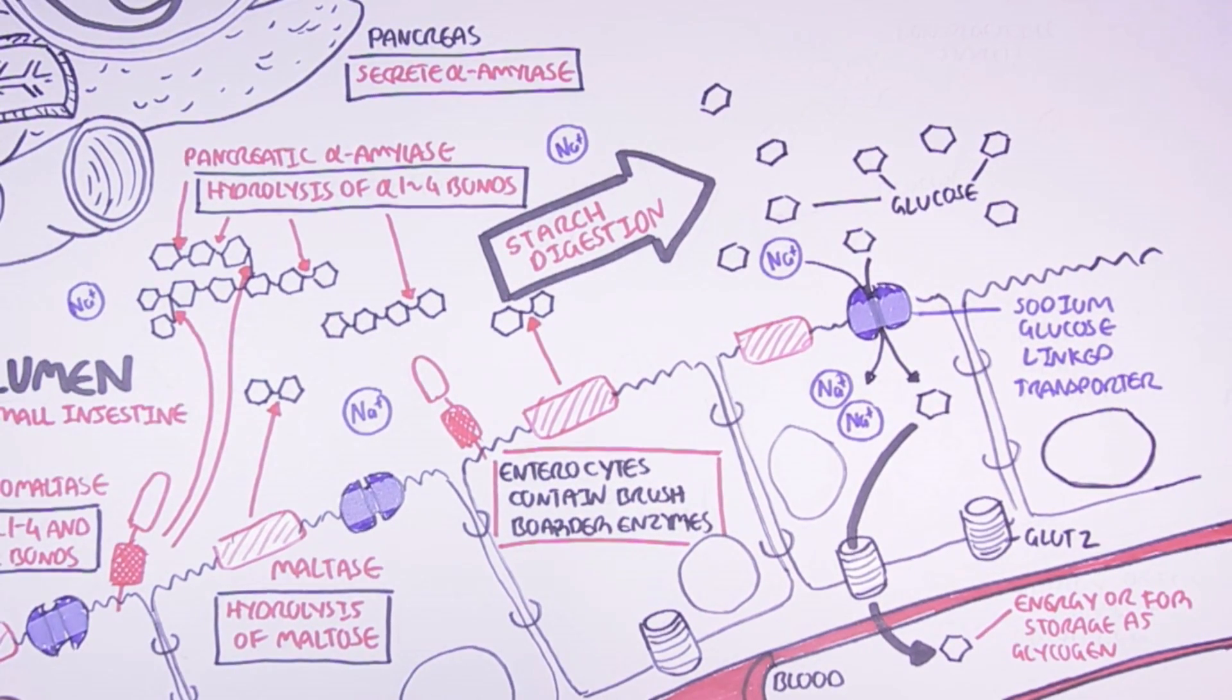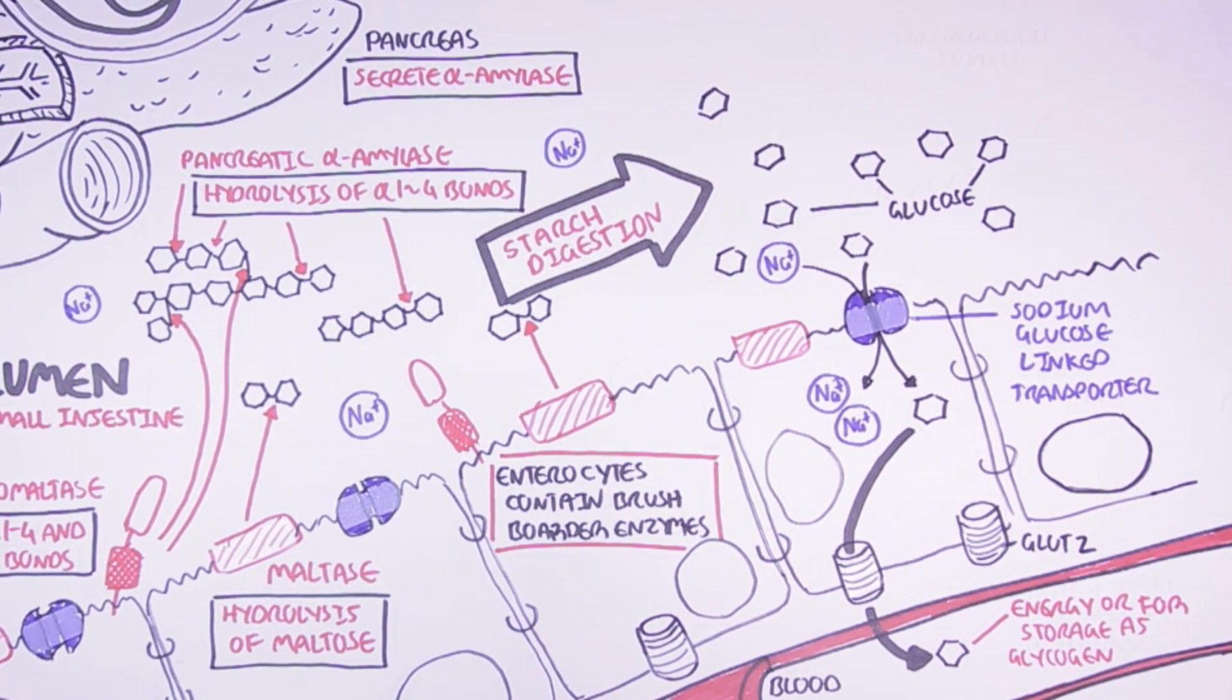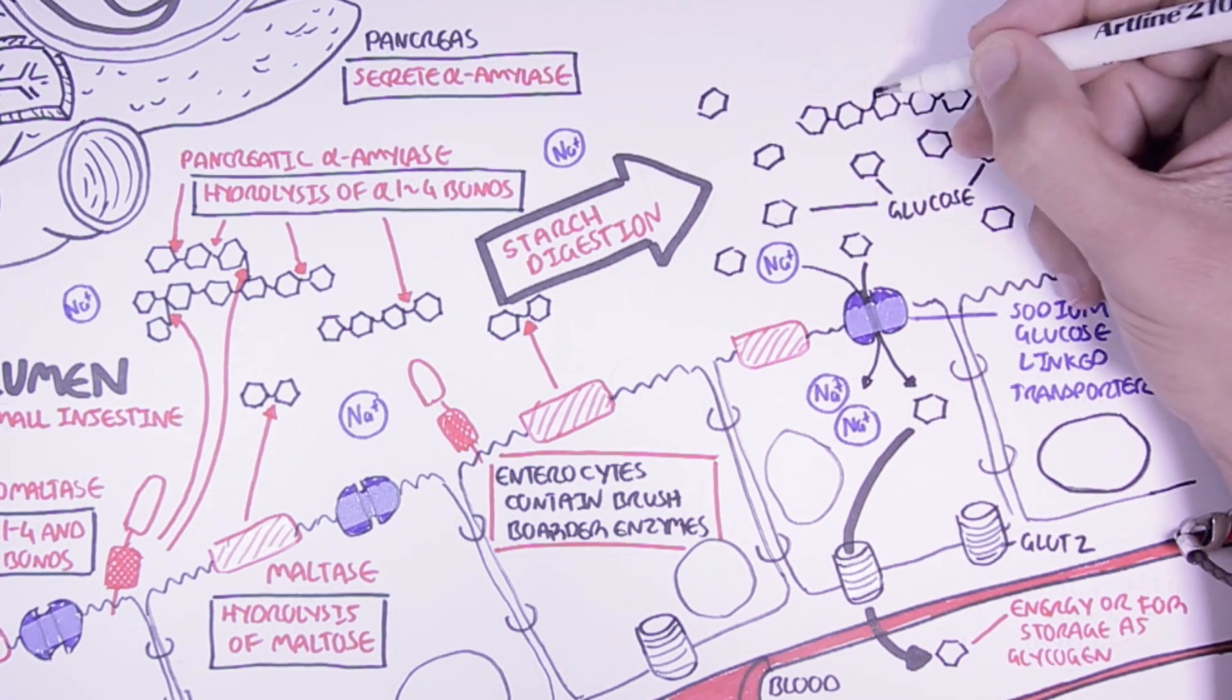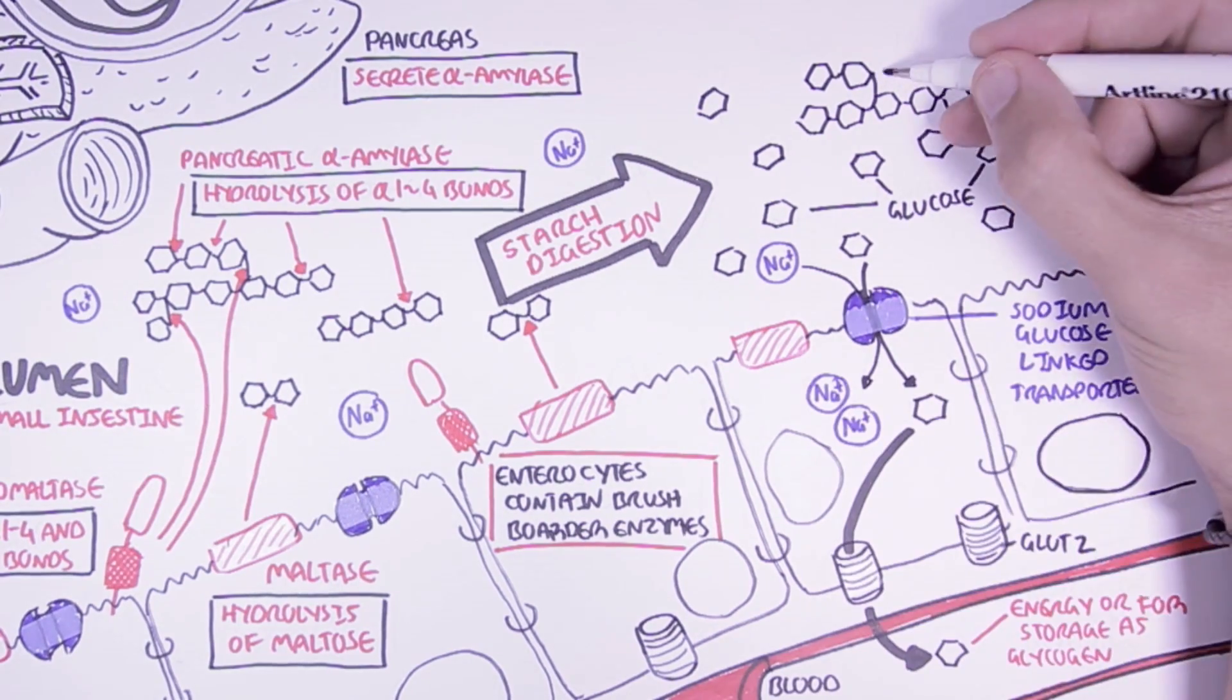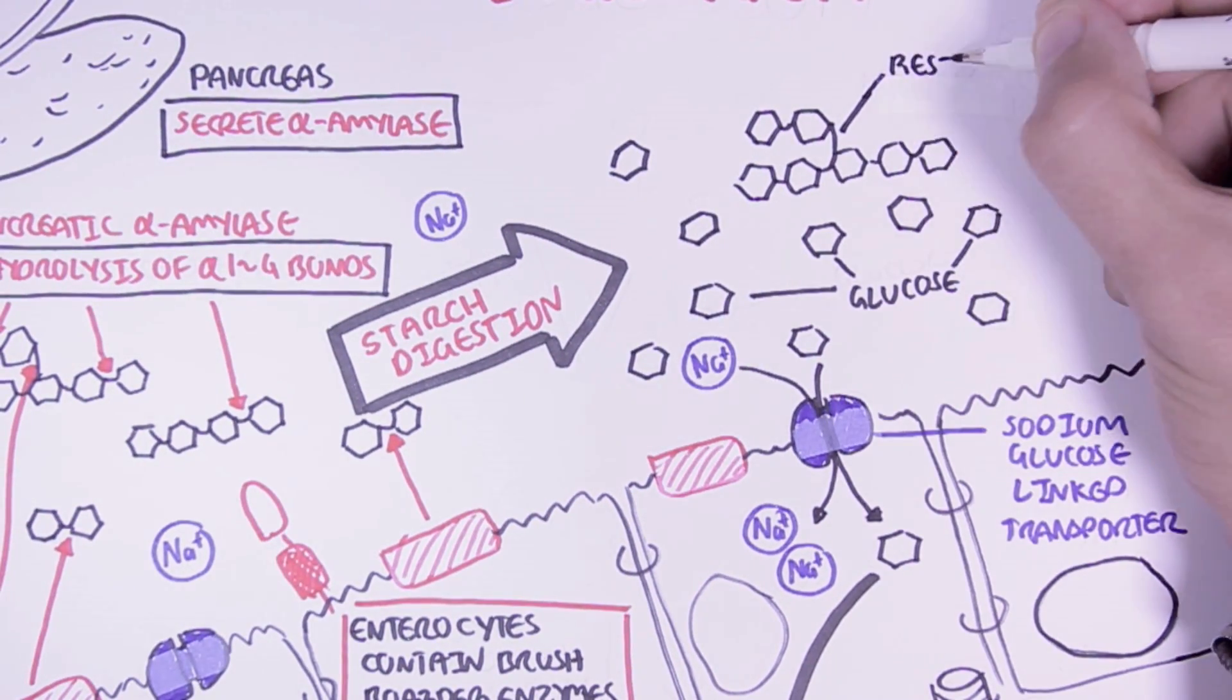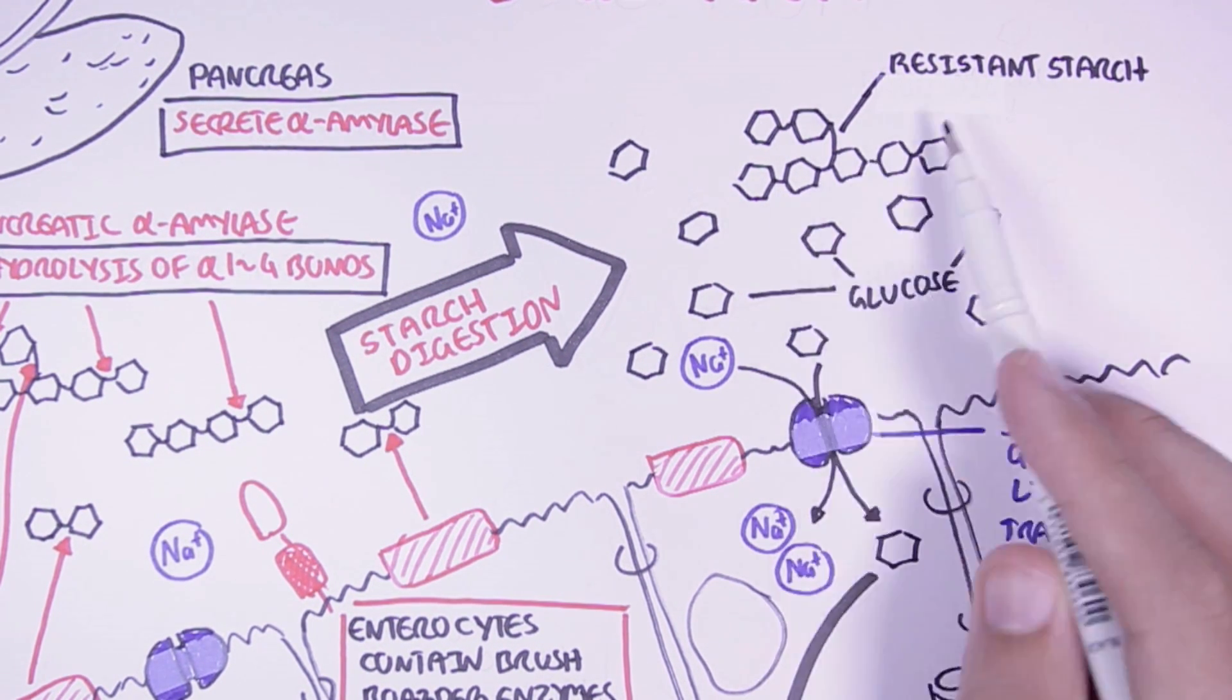So that was the fate of starch. Once it is broken down in the small intestine, it is absorbed by the body and can be used as energy. However, not all portions of starch is digested in the small intestine. The portion of starch that resists digestion in the small intestine are known as resistant starch. And this fraction of starch will essentially reach the colon.